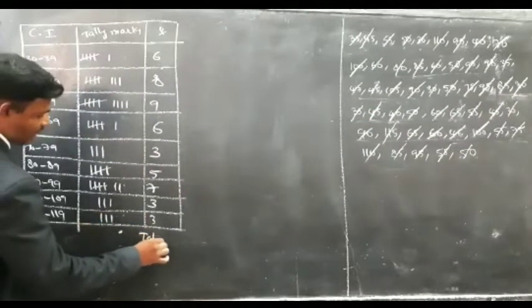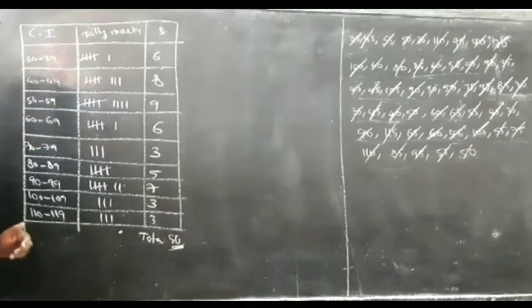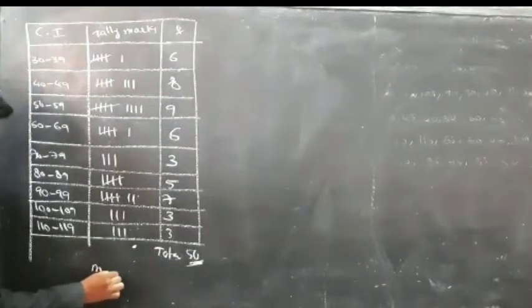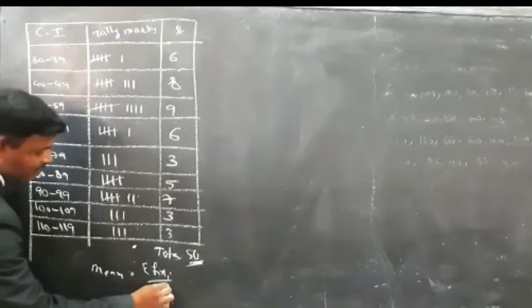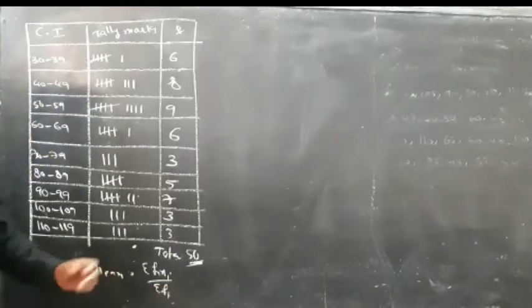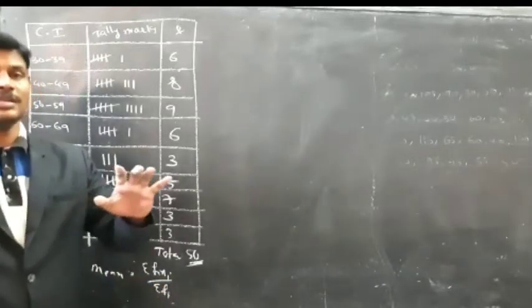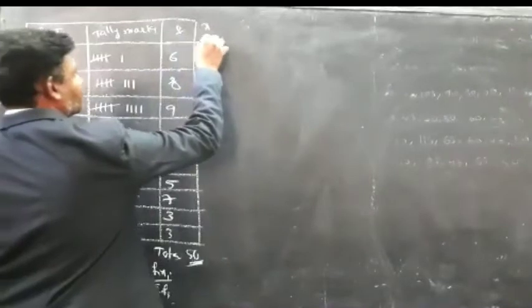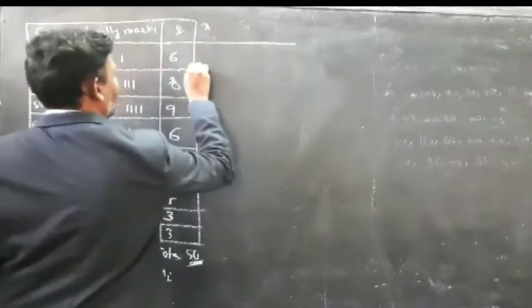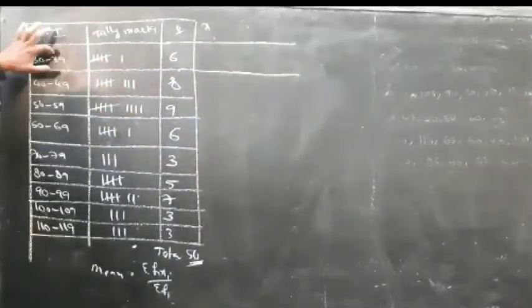So the total is 50. To find the mean, X is nothing but the mid-value of the class. To find X for each class, we start with the class 30 to 39.